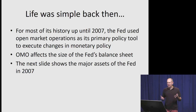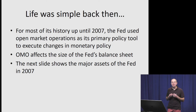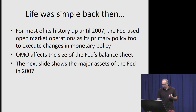Back in the days, up until 2007, the Fed would use ordinary open market operations as its primary policy tool for the execution of monetary policy. As we saw in a previous video, open market operations affect the size of the Fed's balance sheet. What we have here is a picture of what the Fed's balance sheet — at least the asset side — looked like in 2007.